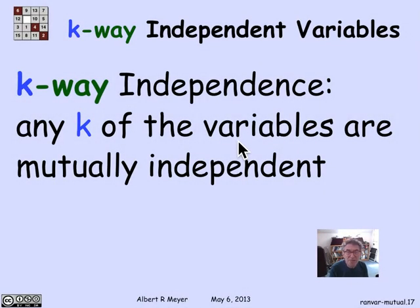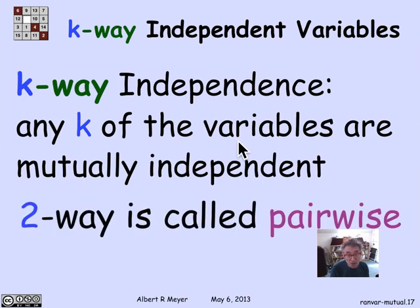The notion of K-way independence carries right over from the event case. If we have a large number of random variables, they're K-way independent if every set of K of them are mutually independent. As with events, the two-way case is called pairwise independence.